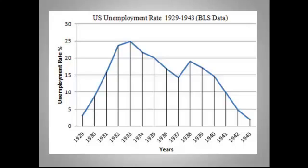Many economists also think that government intervention by both Republican President Herbert Hoover and Democratic President Franklin Roosevelt made the depression worse — not social welfare programs like the Works Progress Administration or Social Security, but efforts to keep prices and wages from falling. They even allowed businesses to form legally sanctioned cartels to try to keep prices up. Many economists now think it would have been smarter to let wages and prices drop to a new equilibrium, which would have been painful, but the economy would have adjusted back more quickly.